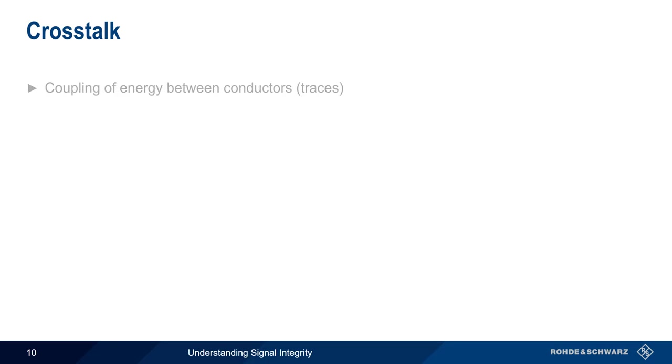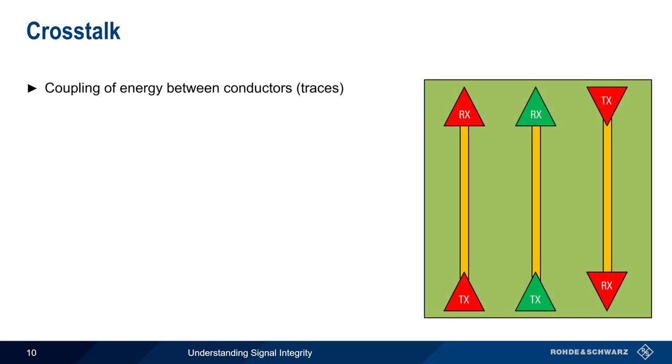Crosstalk refers to the coupling of energy between adjacent conductors or traces. It's largely a function of geometric dimensions and positioning. Crosstalk can be created either by mutual inductance and or mutual capacitance. Often the terms aggressor and victim are used when describing this coupling of energy.